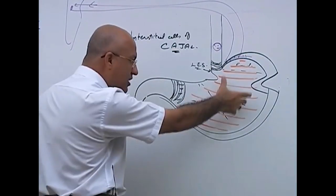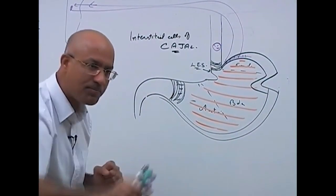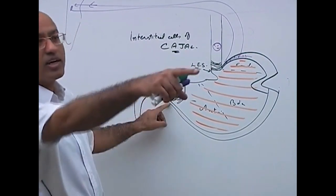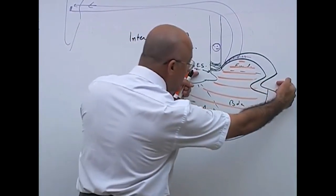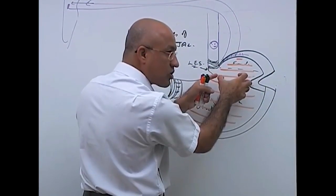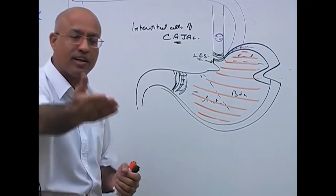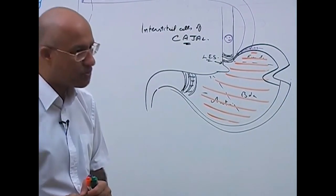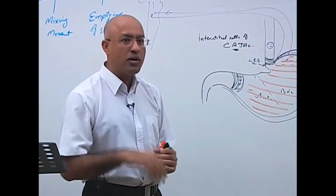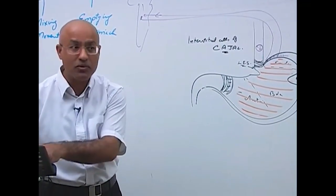These constriction rings move from the body toward the antrum and pylorus, carrying stomach contents forward. But when the mixing contractions approach the pylorus, it does not open — rather it becomes a little more tight. This is an important exception: if the pylorus opened during weak mixing contractions, all one and a half liters would flood into the duodenum, which the duodenum cannot handle.